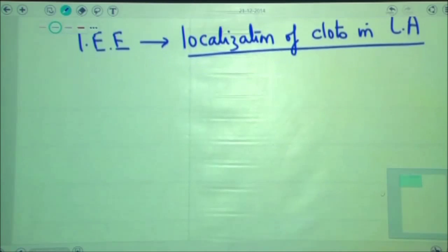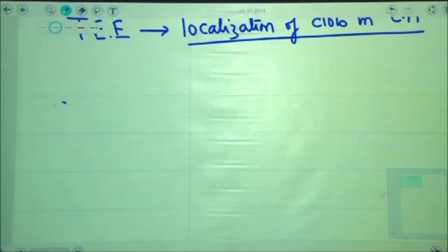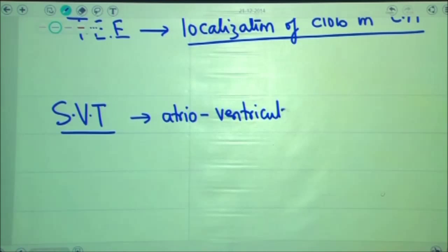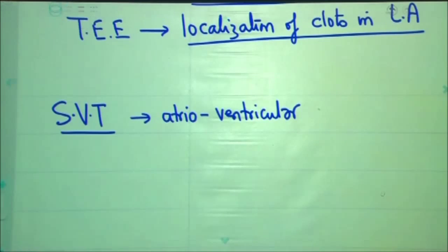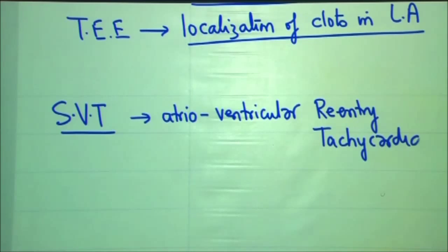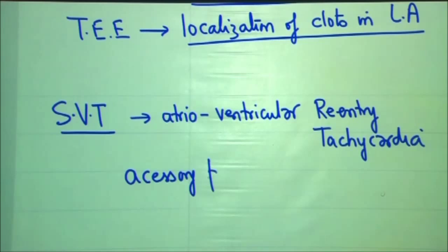The next arrhythmia we will be discussing is again a supraventricular tachycardia. This supraventricular tachycardia is due to abnormal atrioventricular conduction via an accessory pathway — this is known as atrioventricular reentrant tachycardia, which develops due to an accessory pathway present in the heart of the patient.